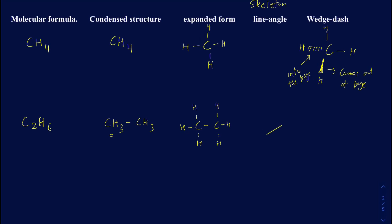If you see a line, the ends of the lines represent the carbons. In skeleton structures, you don't show the hydrogens bonded to the carbons — it's automatically assumed that if there is a single bond between the two carbons, those terminal carbons will have three hydrogens attached to them. That's just the best way to write big molecules without looking messy.